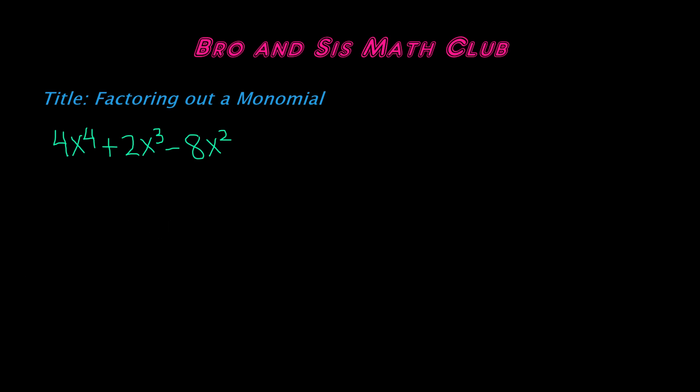Here we have a polynomial that consists of three monomials. So we have 4x to the fourth, 2x cubed, and we have 8x squared. So these three monomials make up the polynomial 4x to the fourth plus 2x cubed minus 8x squared.